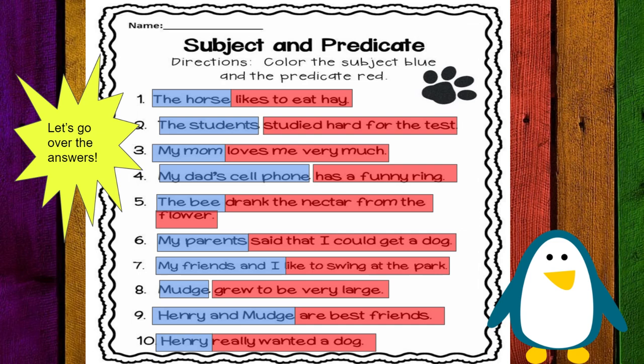Always keep in mind: the subject is what the sentence is about, and the predicate is telling what the subject is doing. Together, the subject and the predicate make a complete sentence.